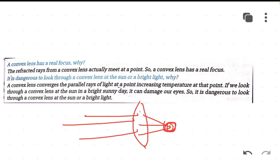Next question: it is dangerous to look through a convex lens at the sun or a bright light — why? The answer is that a convex lens converges the parallel rays of light at a point, increasing the temperature at that point. If we look through a convex lens at the sun on a bright sunny day, it can damage our eyes, so it is dangerous to look through a convex lens at the sun or a bright light.